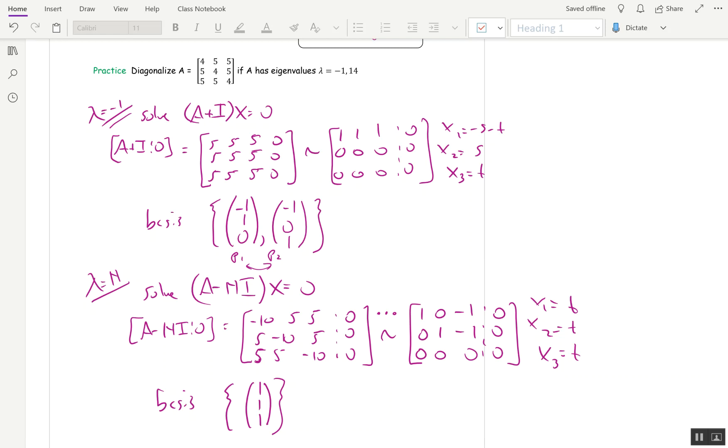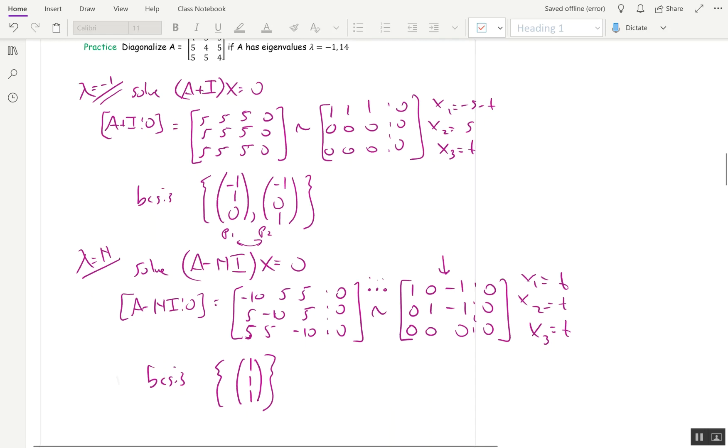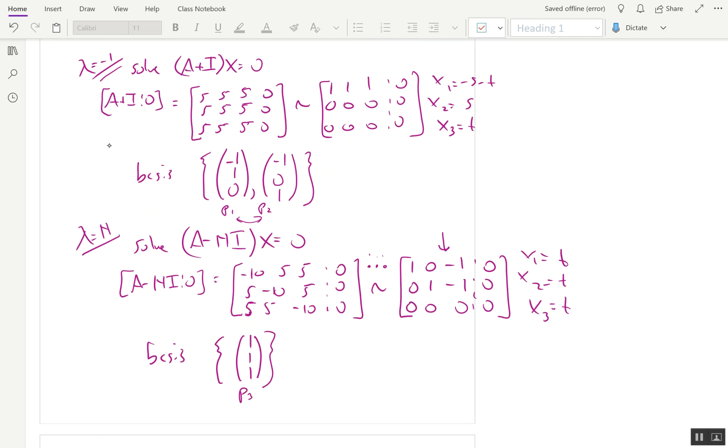Then for lambda equals 14, I went ahead and solved A minus 14I times X equals 0. And after I reduced and I put dot dot dot because it took a couple steps, I ended up with this matrix. And so we get one eigenvector in this basis, just the single vector 1, 1, 1. So let's call this P3.